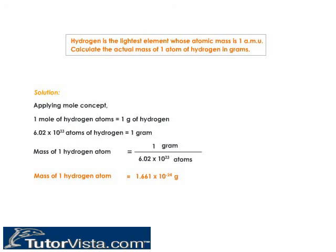Congratulations, you have solved the numerical. So the mass of one hydrogen atom is equal to 1.661 into 10 to the power minus 24 grams.